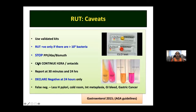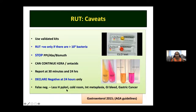Daycare endoscopy patients often arrive on PPI, making RUT potentially false negative. If the patient is very symptomatic, switch to antacids or H2 blockers while awaiting endoscopy. False negatives for RUT can also result from low H. pylori load, cold room temperature, intestinal metaplasia, or gastric cancer. On biopsy, chronic inactive gastritis is the commonest report; when activity is present, look carefully for H. pylori on H&E staining.